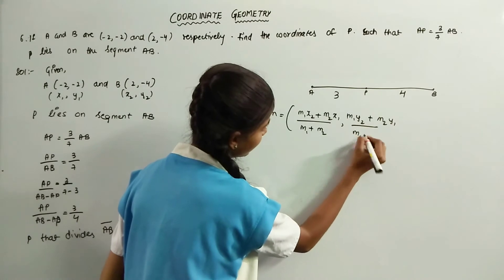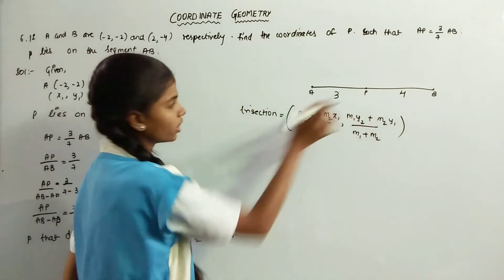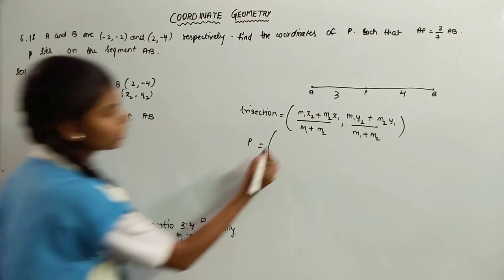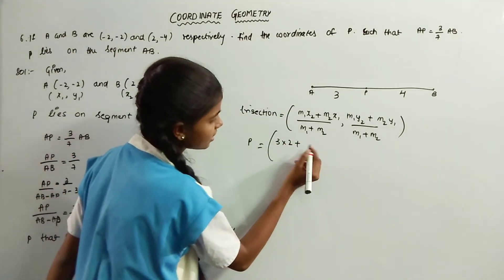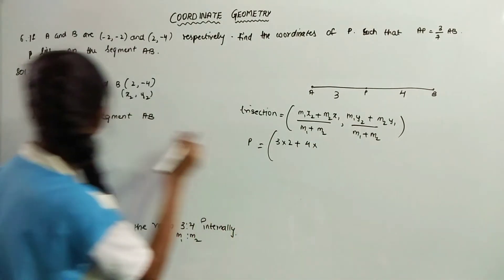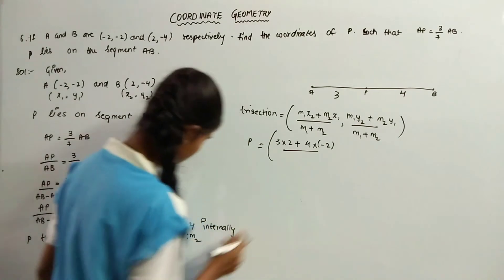Here, the point P is equal to M1 is 3 into x2 is 2 plus M2 is 4 into x1 is minus 2, divided by M1 is 3 plus M2 is 4.